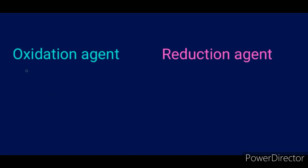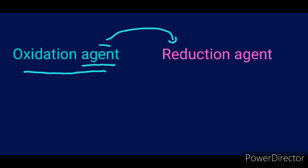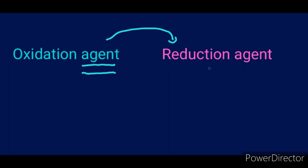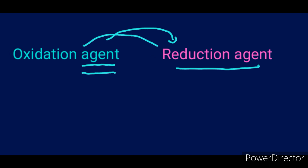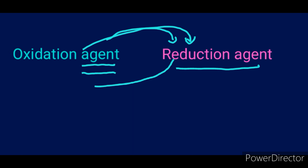Let's look at the oxidizing agent. It's called oxidizing agent not because it is the one being oxidized — it is used as an agent to cause the other one to oxidize. Think of it as an instrument. Similarly, a reducing agent is used as an instrument to cause the other one to be reduced. So the oxidizing agent causes the other to be oxidized, and the reducing agent causes the other to be reduced.